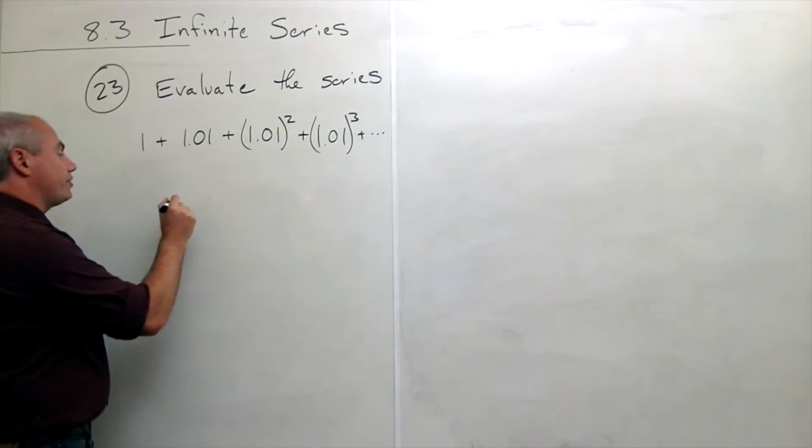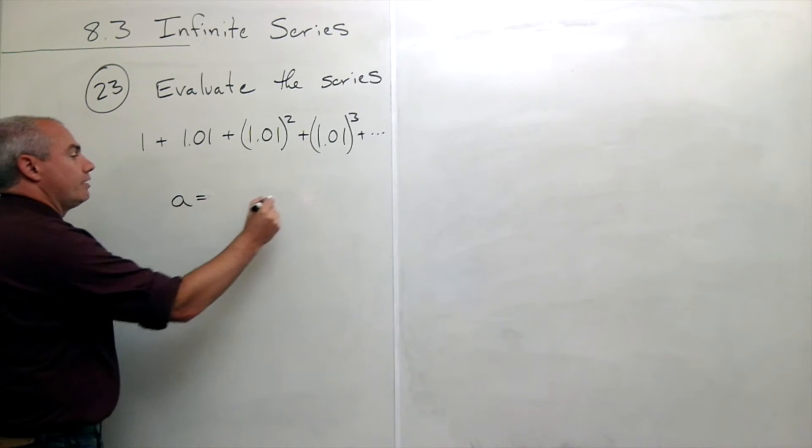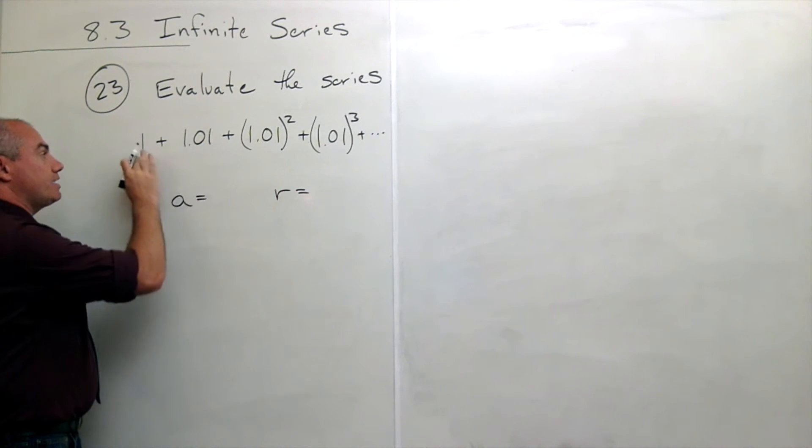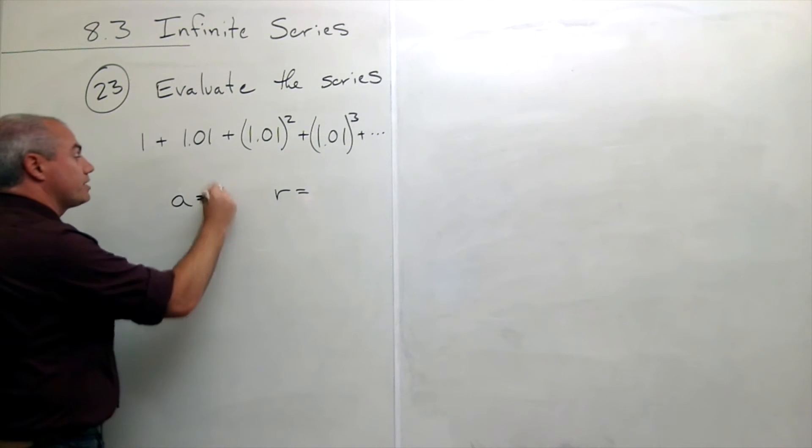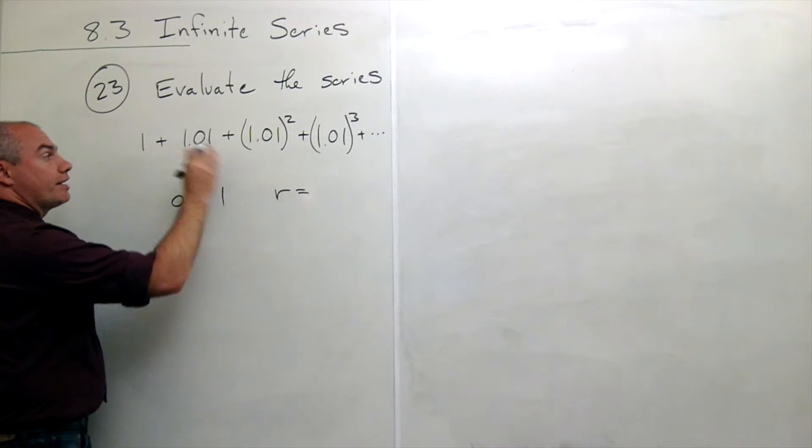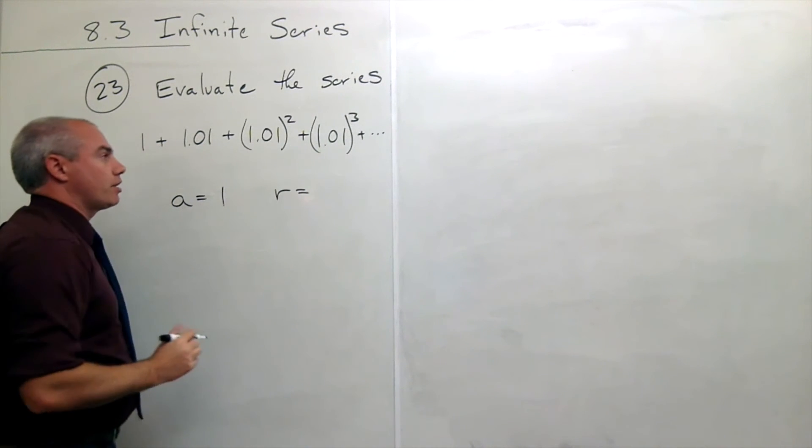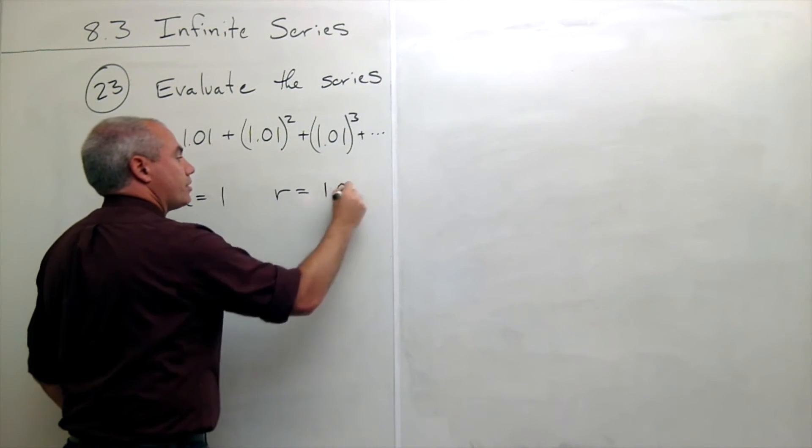Once I know it's geometric I ask what is A and what is R? A in this case is the first term of the series, it's always the first term of the series, and that's 1. R is what I multiply by every time to get the next term, and that's 1.01.